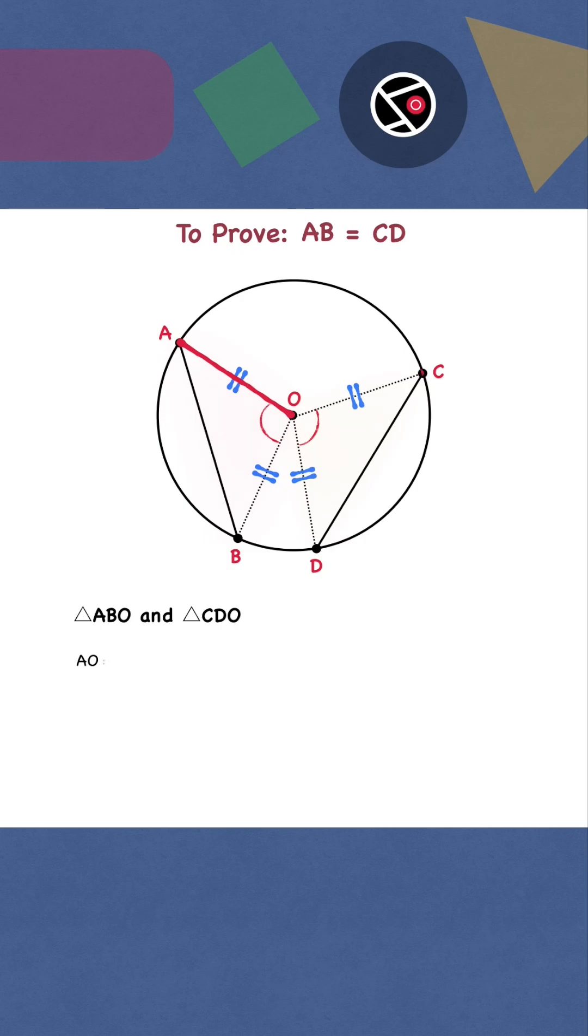AO equals CO. Angle AOB equals angle COD. BO equals DO. We have two pairs of congruent sides. Corresponding included angles are also congruent.